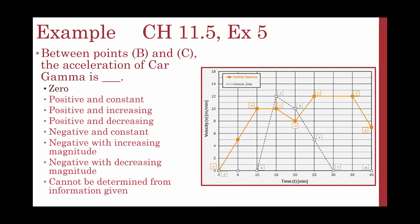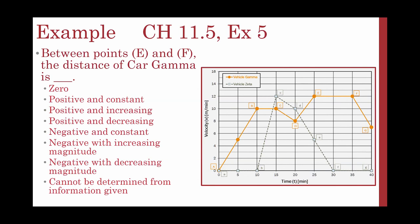Between points B and C, the acceleration of car gamma — the orange line — is zero because we have a horizontal line at that point. Between points C and D, the acceleration of car gamma is negative and constant because we have a downward-sloping line. Between points D and F, the distance of car gamma is positive and increasing, based on the area under the orange curve. Between points E and F, the distance of car gamma is still increasing and positive.